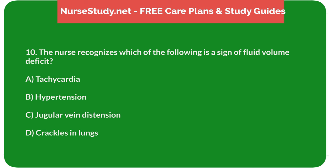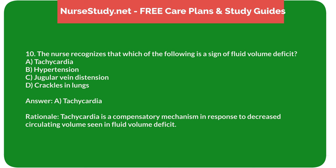Question 10: The nurse recognizes which of the following is a sign of fluid volume deficit? A. Tachycardia. B. Hypertension. C. Jugular vein distension. D. Crackles in lungs. Answer: A. Tachycardia. Rationale: Tachycardia is a compensatory mechanism in response to decreased circulating volume seen in fluid volume deficit.